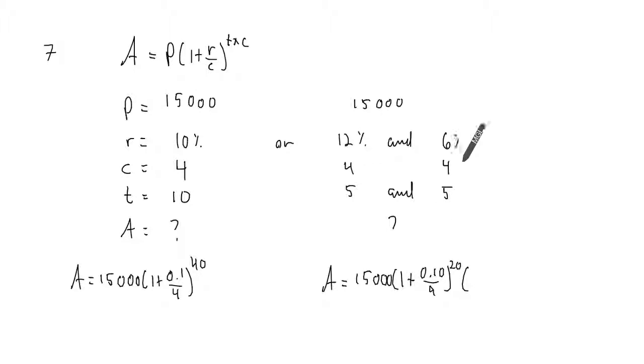And then that amount will be multiplied by 1 plus 0.06 divided by 4 for the remainder, 20 compounding periods.